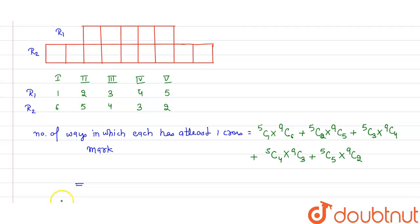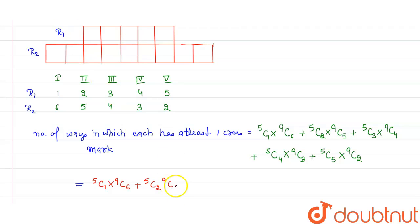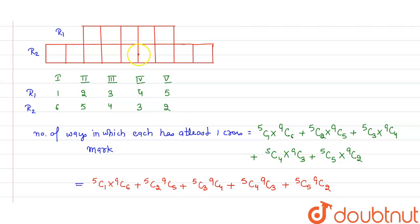Simplifying, the final answer is: 5C1 × 9C6 + 5C2 × 9C5 + 5C3 × 9C4 + 5C4 × 9C3 + 5C5 × 9C2. This is the complete answer to our question.